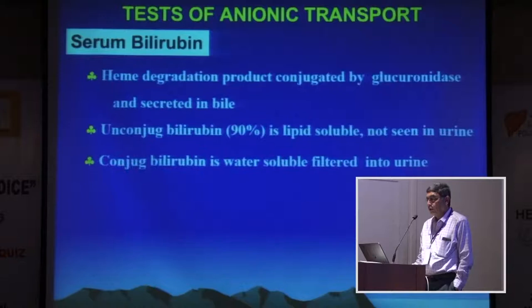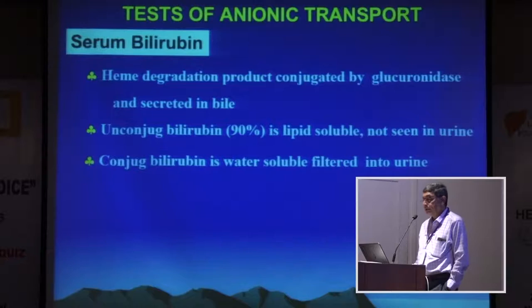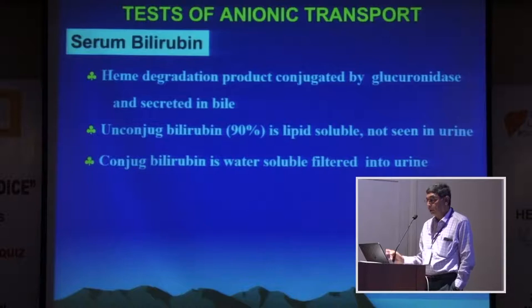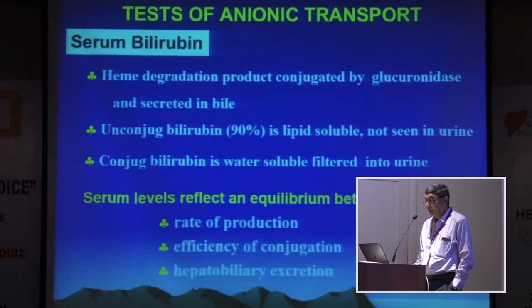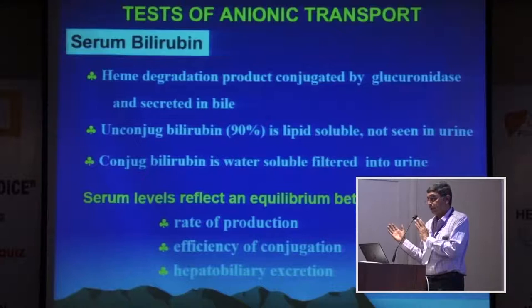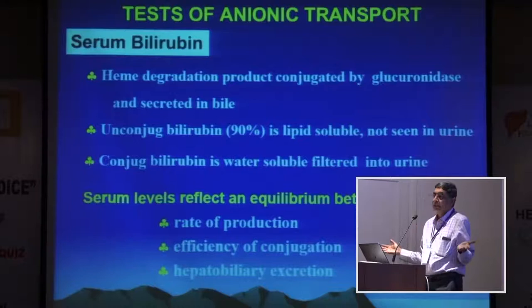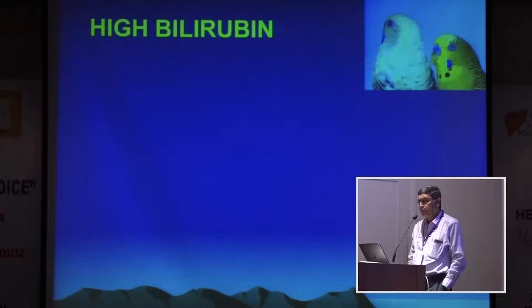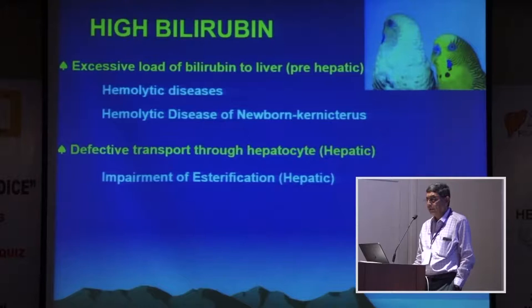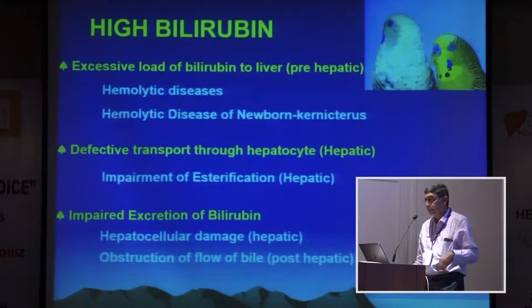Serum bilirubin is a heme degradation product. 90% unconjugated bilirubin is lipid soluble and therefore not seen in the urine. Conjugated bilirubin is water soluble and filtered into the urine — which is why unconjugated hyperbilirubinemia stains the diaper, and why urine color is easier for a mother to detect than stool color. Serum bilirubin reflects an equilibrium between rate of production, efficiency of conjugation, and excretion. When bilirubin is high, first decide which of these three factors is responsible: increased production, a problem with flow into bile, or a problem with conjugation.